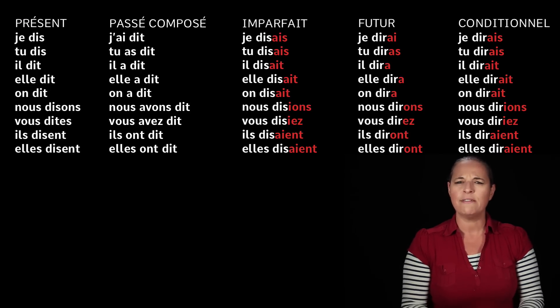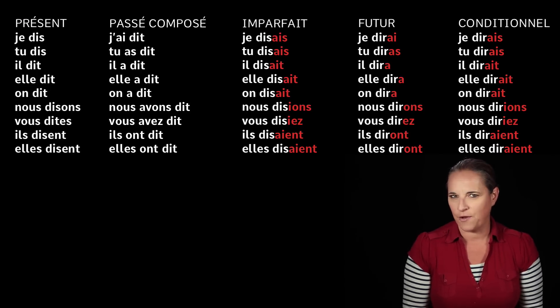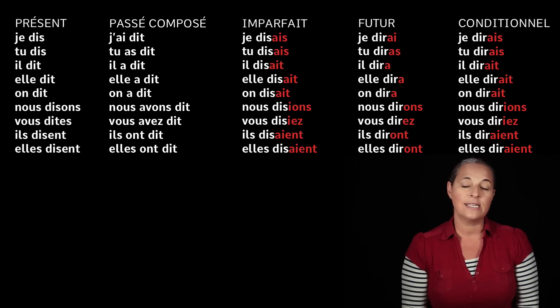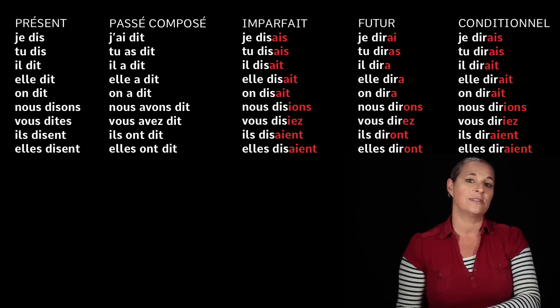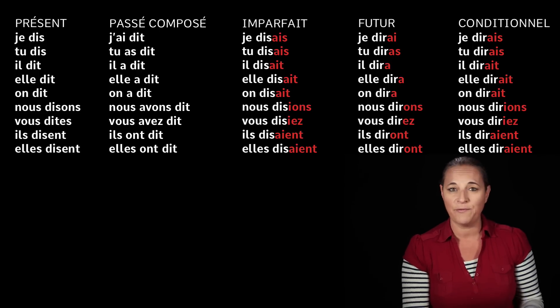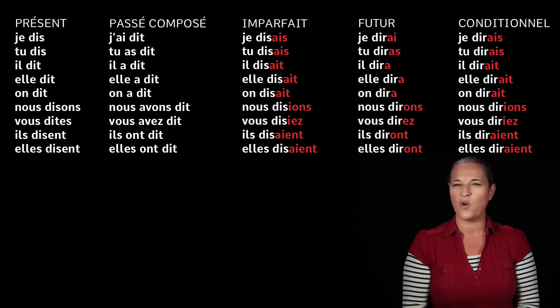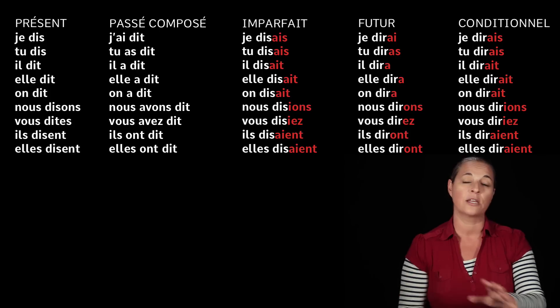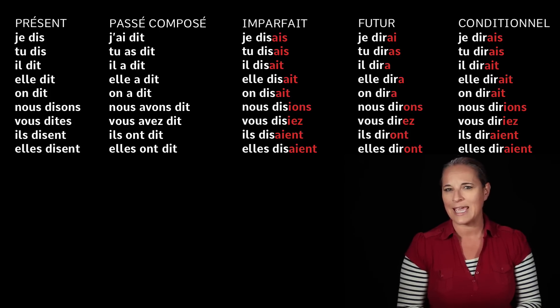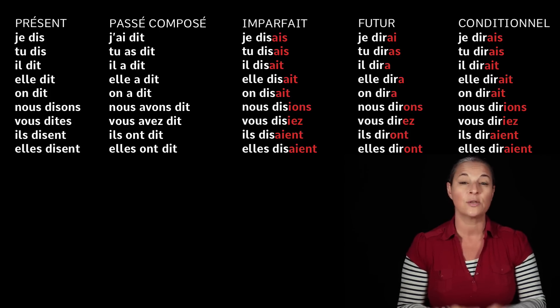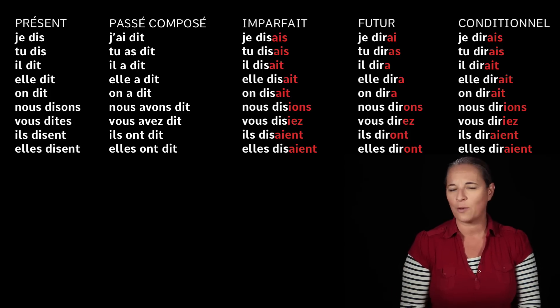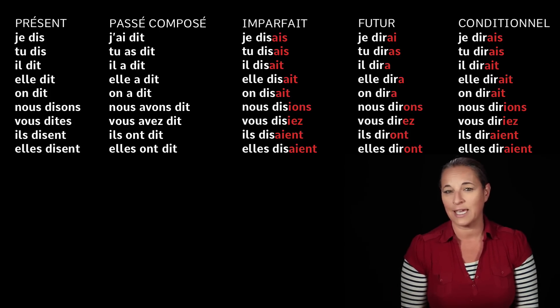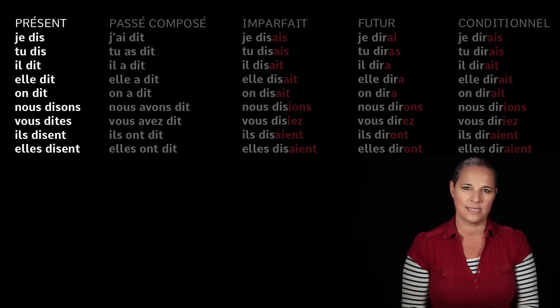Dire is an irregular verb. It is a verb which is known as a third group verb, so therefore it might be very different when conjugating it. So let's have a look at what it looks like in the present tense.